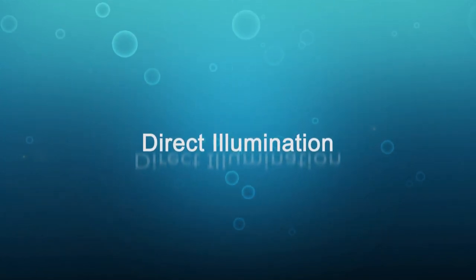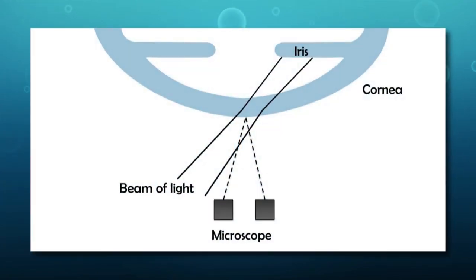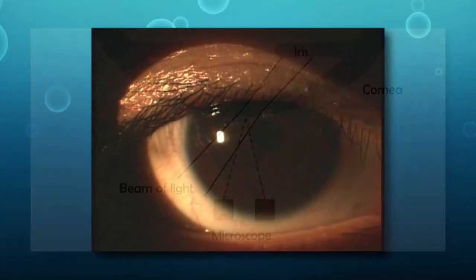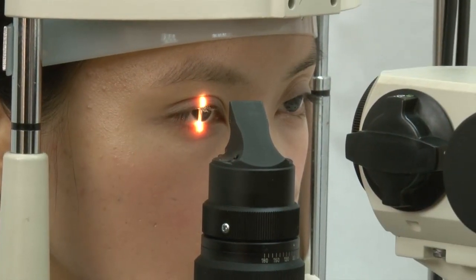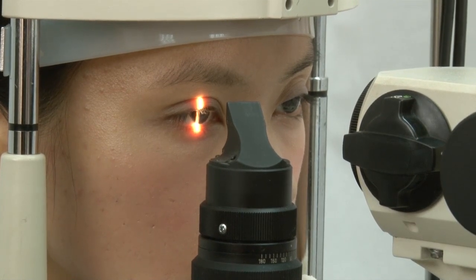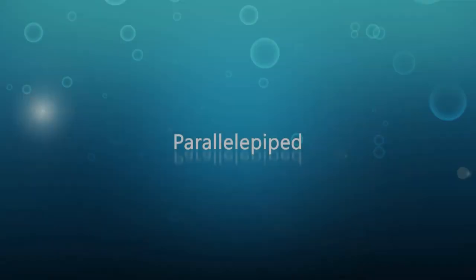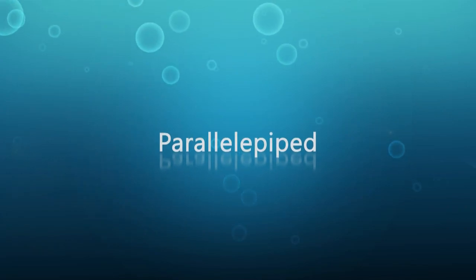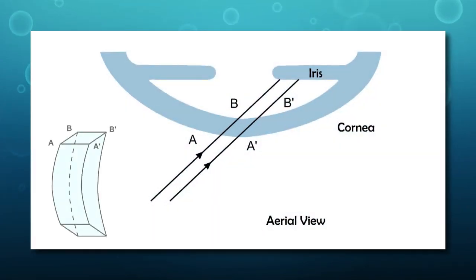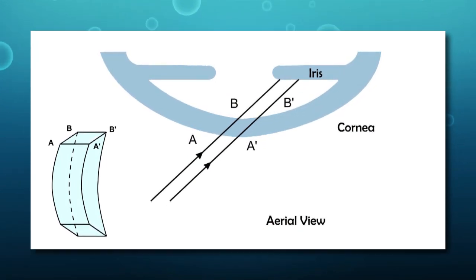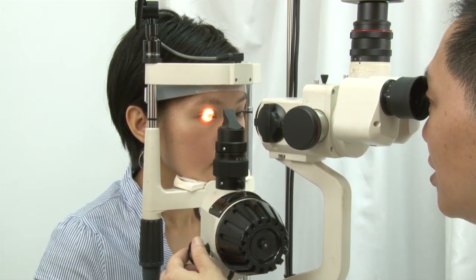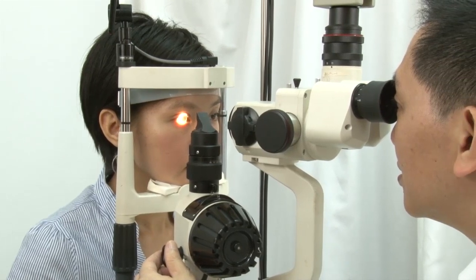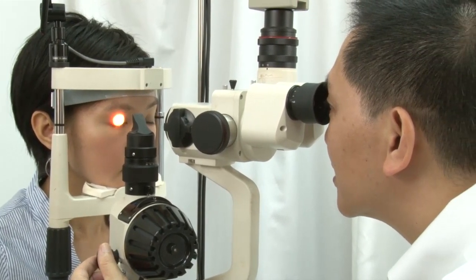The second type is direct illumination, where the light source and observation focus coincide on the same spot on the eye regardless of the position of either system. Direct illumination can be subdivided into the following techniques. The first is the parallelepiped: this technique requires narrowing the wide slit beam to about one to two millimeters. It is useful for a general survey of the corneal layers — for example, the epithelium, stroma, and endothelium — as well as viewing scars, abrasions, and corneal nerves.